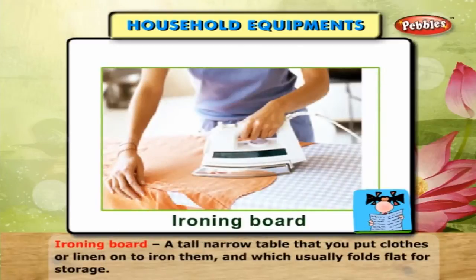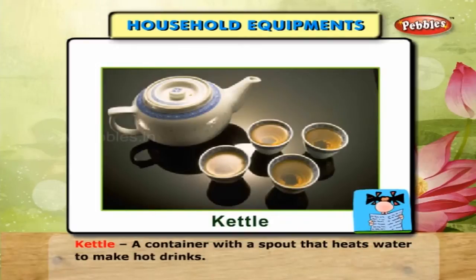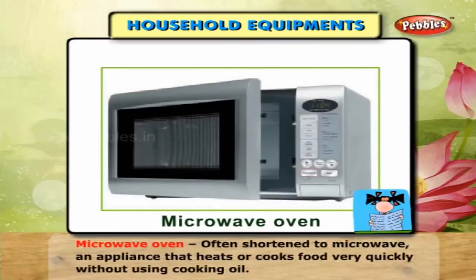Ironing board — a tall narrow table that you put clothes or linen on to iron them, and which usually folds flat for storage. Kettle — a container with a spout that heats water to make hot drinks. Microwave Oven — often shortened to microwave — an appliance that heats or cooks food very quickly without using cooking oil.